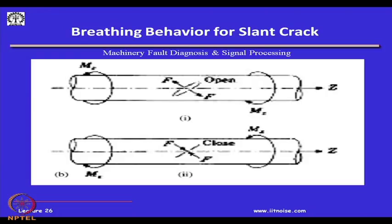Now consider the breathing behavior for a slant crack under torsional loading, where cracks occur along the 45-degree axis. The crack opens and closes — this is also breathing behavior but it is slant. The question is how to distinguish whether a crack occurred because of torsional load or bending load, since in diagnostics you need to determine the cause.